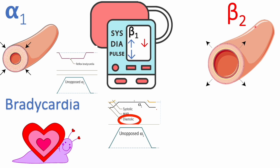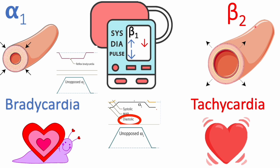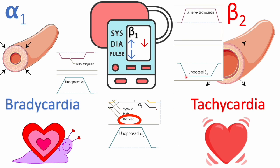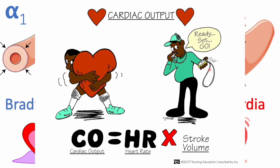Vasodilation, or beta-2 stimulation, leads to reflex tachycardia. We've seen this in the isoproterenol curve — with unopposed beta-2 stimulation and severe vasodilation, the body tries to protect itself from hypotension by increasing the heart rate. So those two curves are opposites: total peripheral resistance is opposite to the heart rate curve when there is unopposed stimulation. The two curves that go hand-in-hand are diastolic blood pressure and total peripheral resistance; the two that go opposite each other are heart rate and total peripheral resistance.